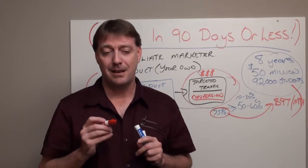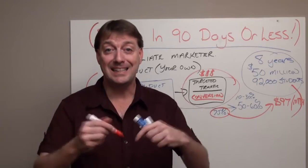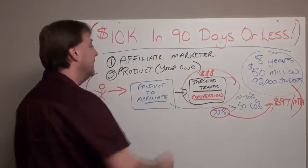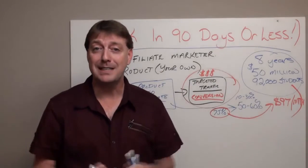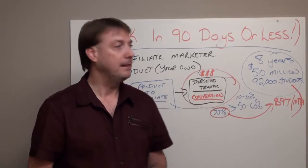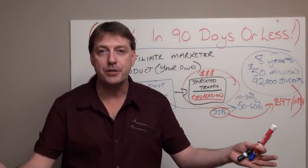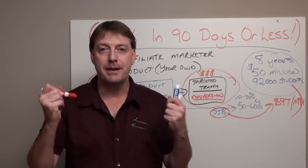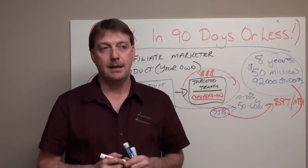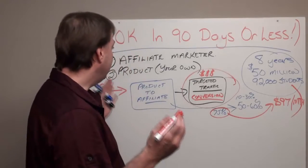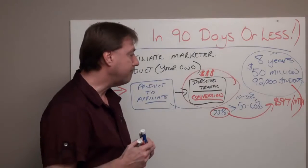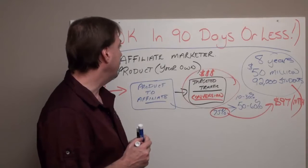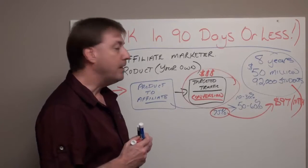But you know what happened? I created a three-step process that combined with this company — $25 a month — that does all of this for you: creates the product, supplies the support staff, supplies the merchant processing, supplies the membership area, supplies everything at $25 a month. I couldn't believe it. It was a no-brainer for me.